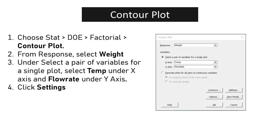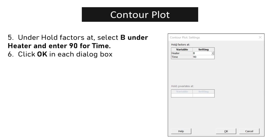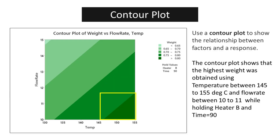Choose Stat > DOE > Factorial > Contour Plot. From Response, select Weight. Under Select a pair of variables for a single plot, select Temp under X-axis and flow rate under Y-axis. Click Settings; under Hold Factors at, select B under Heater and enter 90 for time. Click OK in each dialog box. The contour plot shows that the highest weight was obtained using temperature between 145 to 155 degrees Celsius and flow rate between 10 to 11, while holding Heater B and time equals 90.